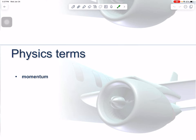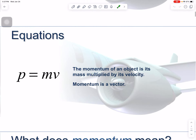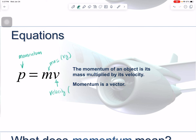We only have one physics term: momentum. And we only have one equation: p equals m times v. p is the variable for momentum — it's a lowercase p, because uppercase P is pressure. m is our usual mass, measured in kilograms, and v is our usual velocity, measured in meters per second. This is the definition of momentum: the mass of an object multiplied by its velocity. Something really important to keep in mind is that momentum is a vector because velocity is a vector, which means direction matters.